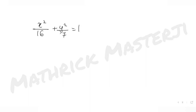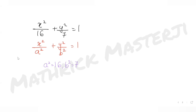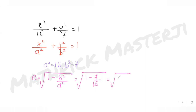For the ellipse, the equation is x² over 16 plus y² over 7 equals 1. Comparing with the general form x² over a² plus y² over b² equals 1, I get a² = 16 and b² = 7. The eccentricity of the ellipse is √(1 − b²/a²) = √(1 − 7/16) = √(9/16) = 3/4.